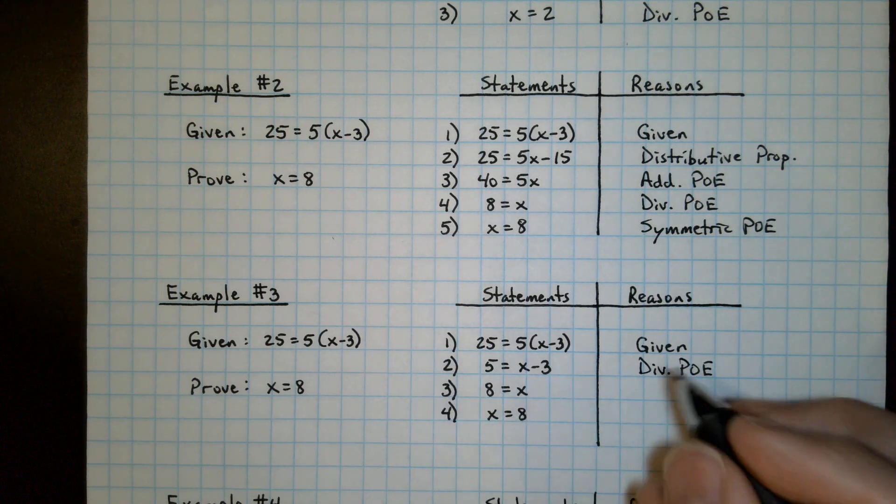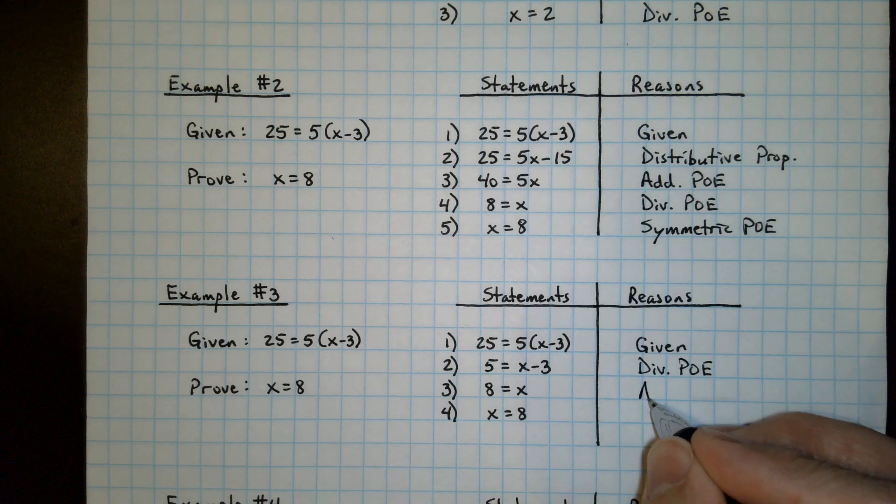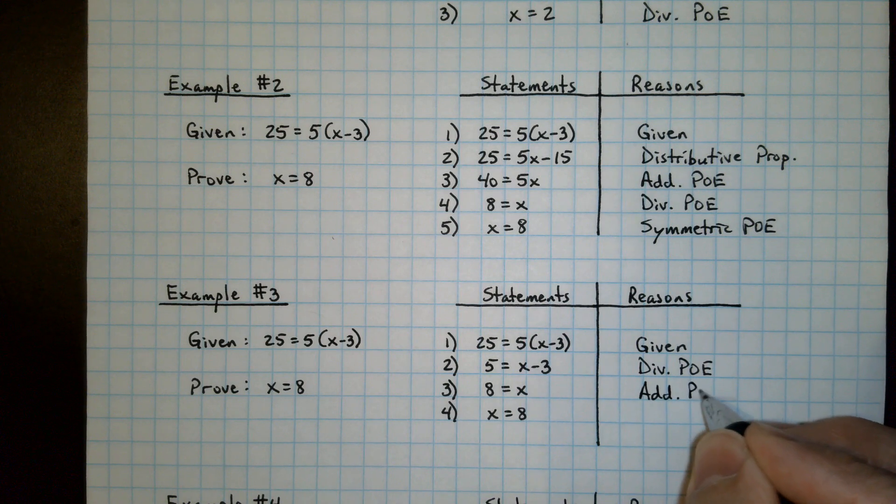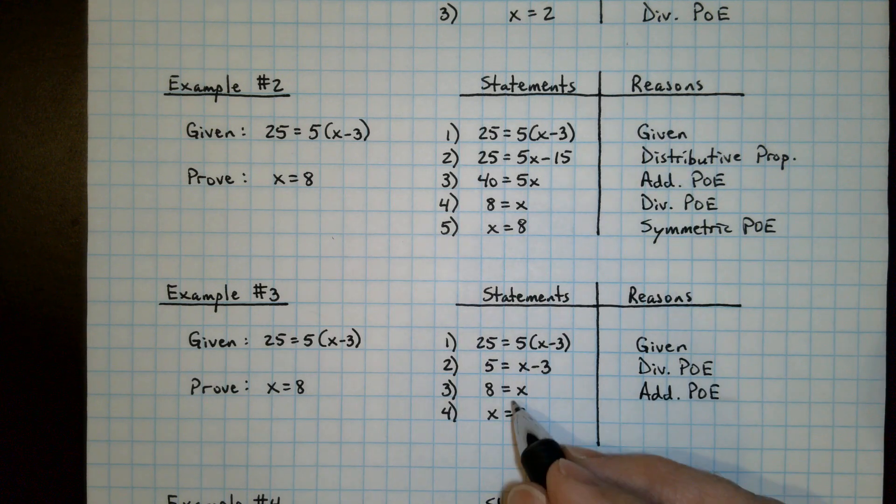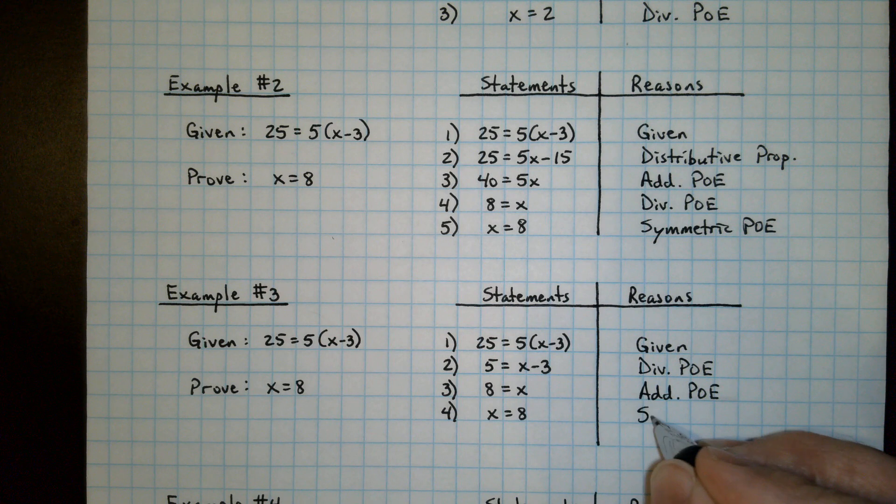Then we added 3. So that is the addition property of equality. And again we swapped the two sides. So this is the symmetric property of equality.